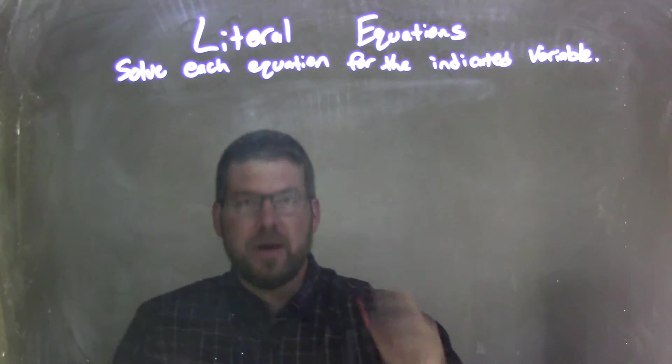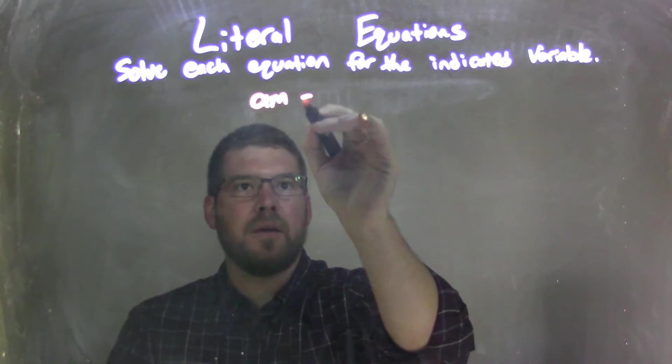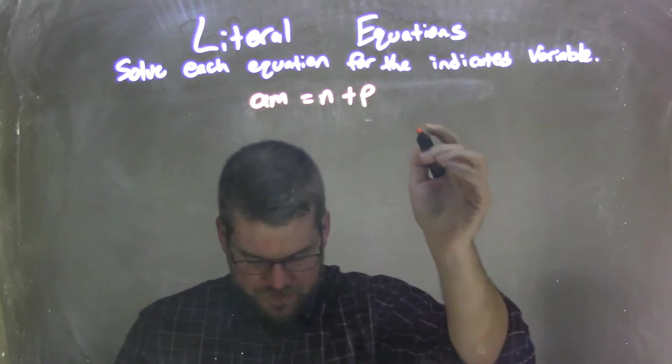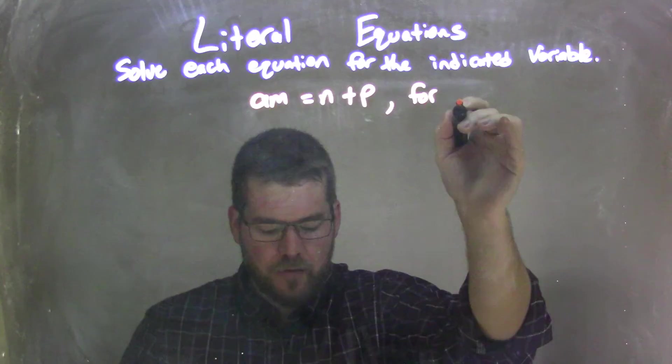So if I was given this equation, am equals n plus p, and we're solving that for a.